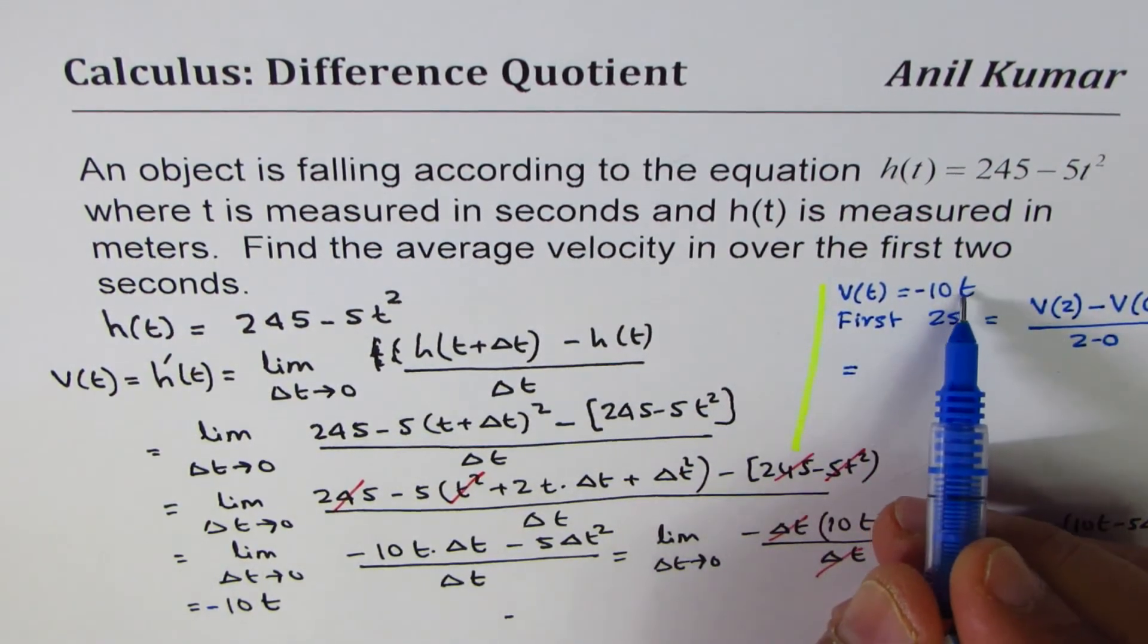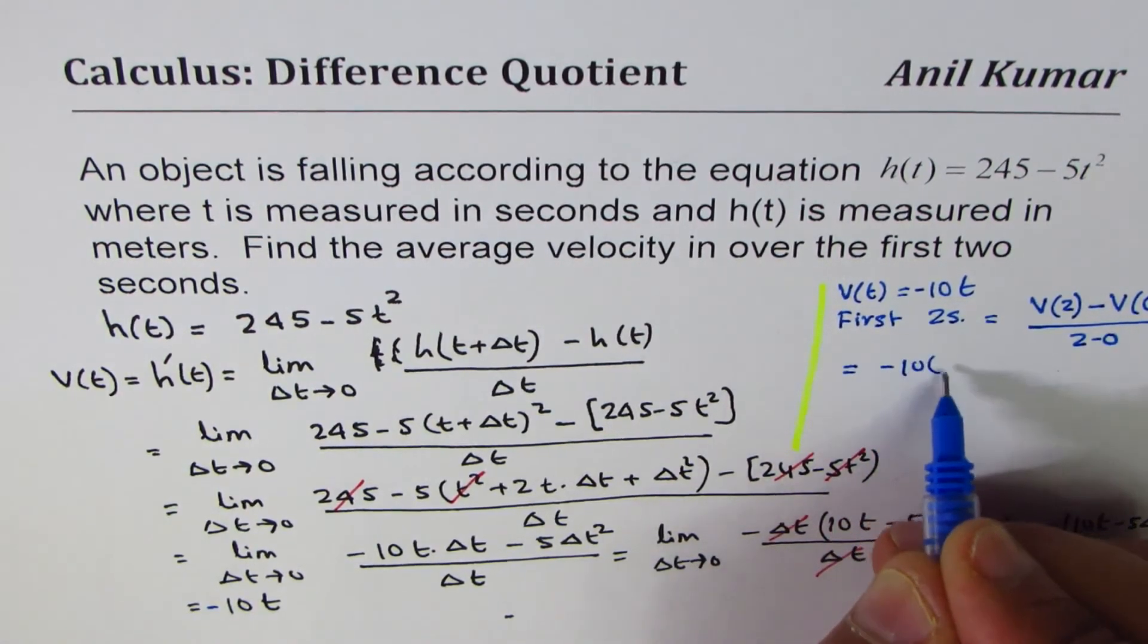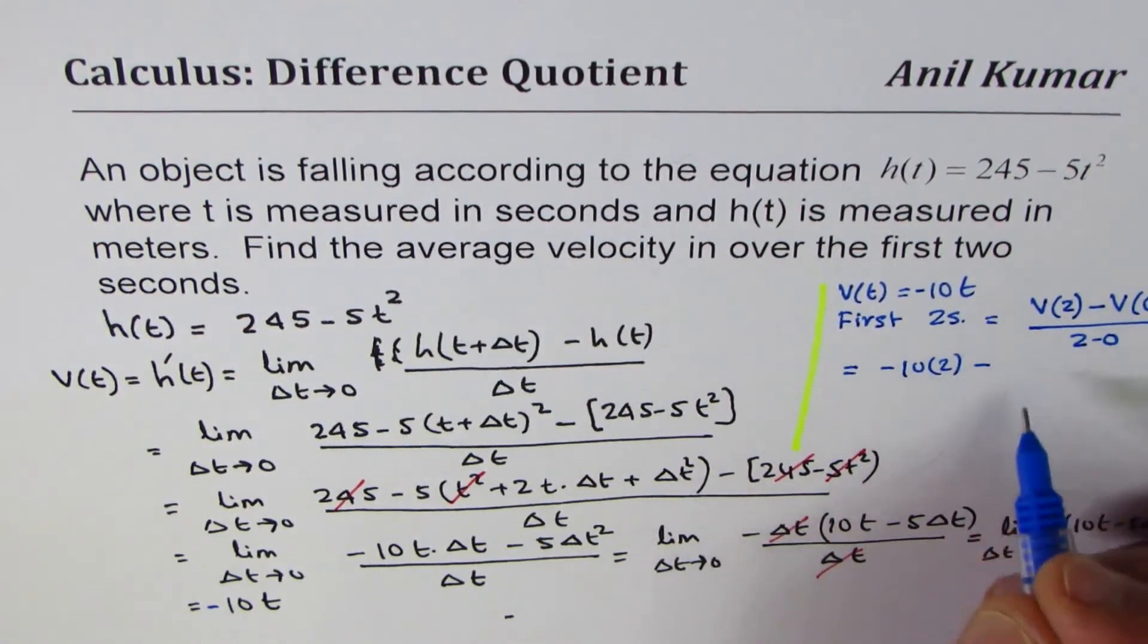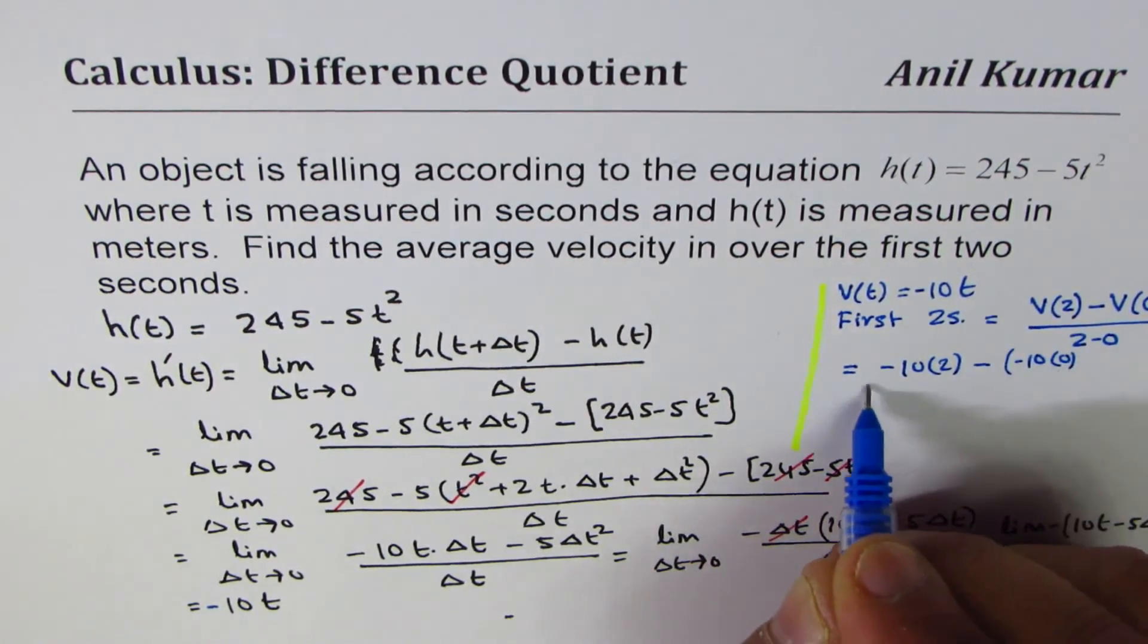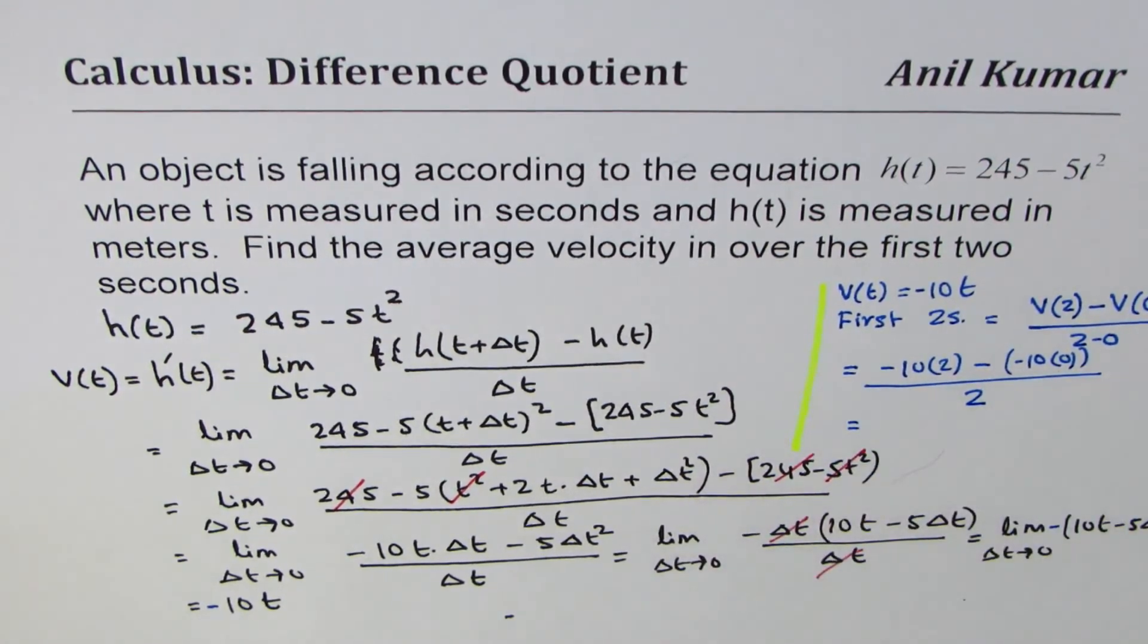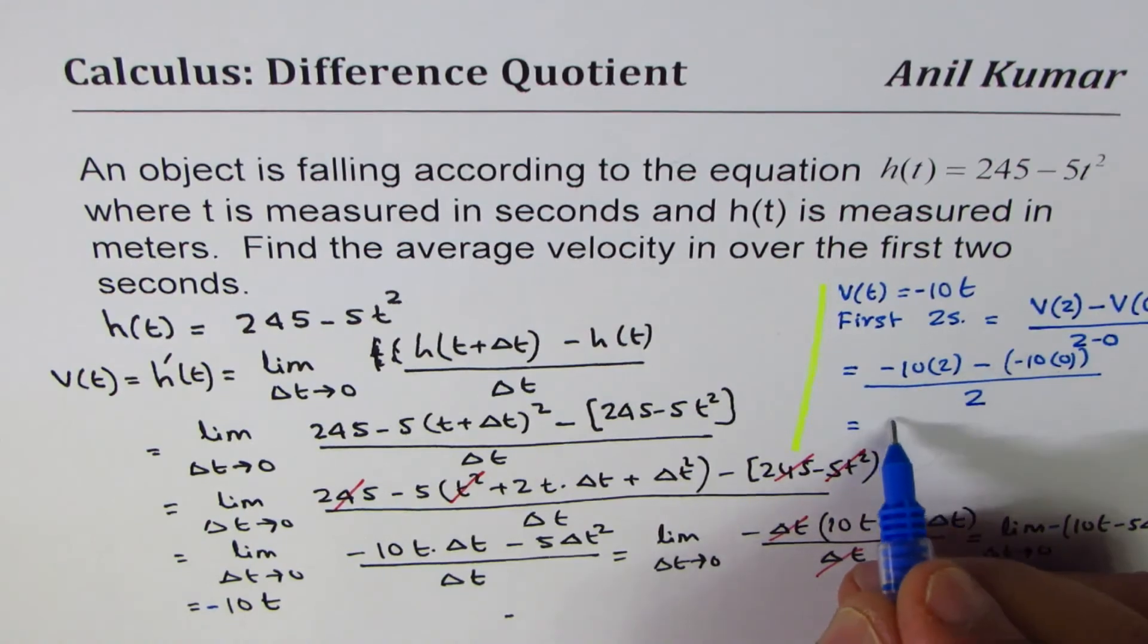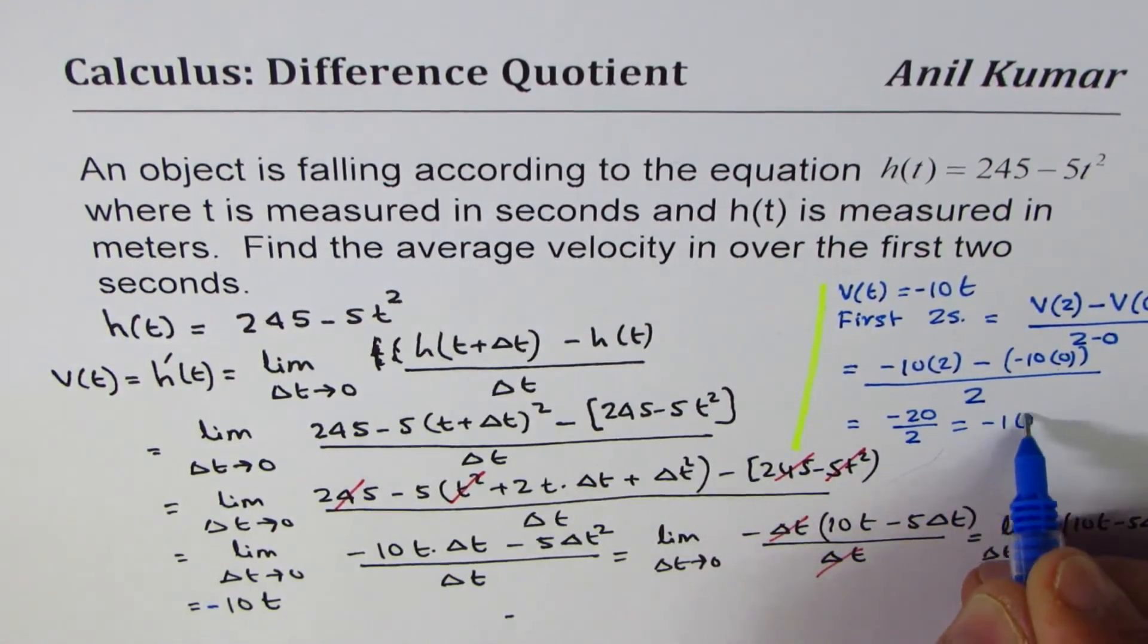So if I substitute 2 here, I'll get velocity at 2. So that means -10 times 2 minus -10 times 0 divided by 2. -10 times 0 is 0. So we are left with -20 divided by 2, which is -10.